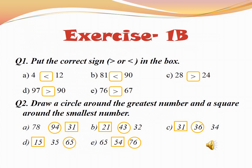Now exercise 1B. Question number 1: put the correct sign. Here you can see two signs — the first is greater than, the second is less than. In the box, we have some questions and we have to put the correct sign. In part A, the numbers we have to compare are 4 and 12. Is 4 greater than or less than 12? Less than 12. So we will put the less than sign in the box.